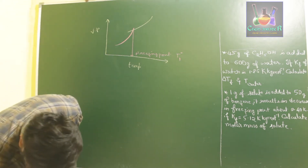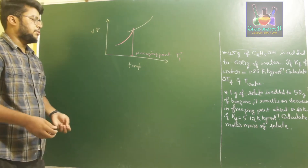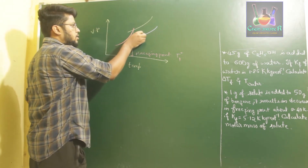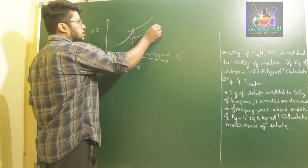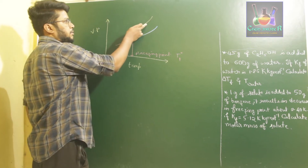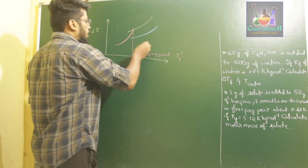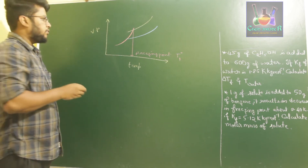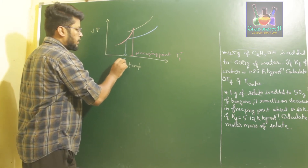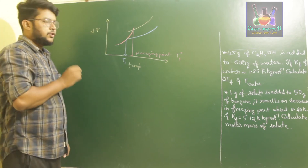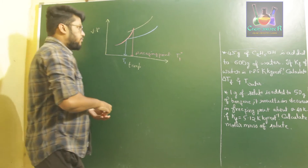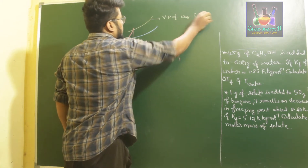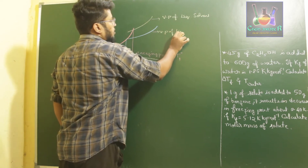Now, when you add an impurity — when you add solute — what happens is, as we know from the elevation in boiling point explanation, the solution's vapour pressure decreases. The vapour pressure of the solution will be lesser than that of the vapour pressure of the solvent in the liquid phase, and it meets the vapour pressure of the solid solvent at a different temperature — let us say T1 — which is the freezing point of the solution.